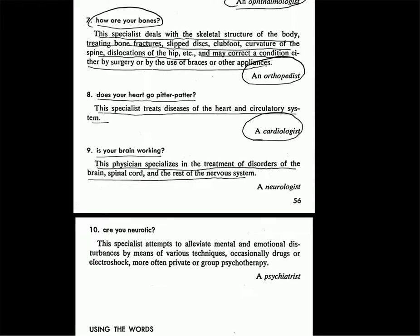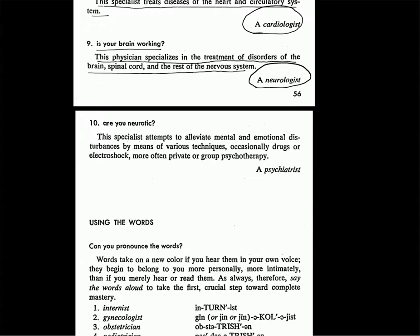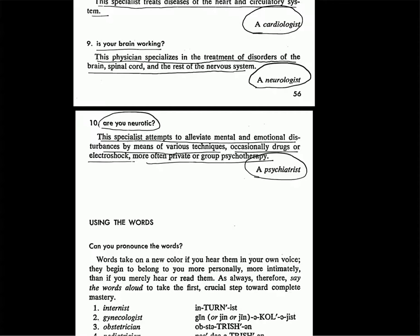Is your brain working? This physician specializes in the treatment of disorders of the brain, spinal cord, and the rest of the nervous system. He or she is a neurologist. Are you neurotic? This specialist attempts to alleviate mental and emotional disturbances by means of various techniques — occasionally drugs or electroshock, more often private or group psychotherapy. They are psychiatrists. Going to a psychiatrist doesn't always mean you are mentally ill; it means you want to alleviate mental disturbances. The trouble can be alleviated or resolved by a good therapist, that is, a psychiatrist.